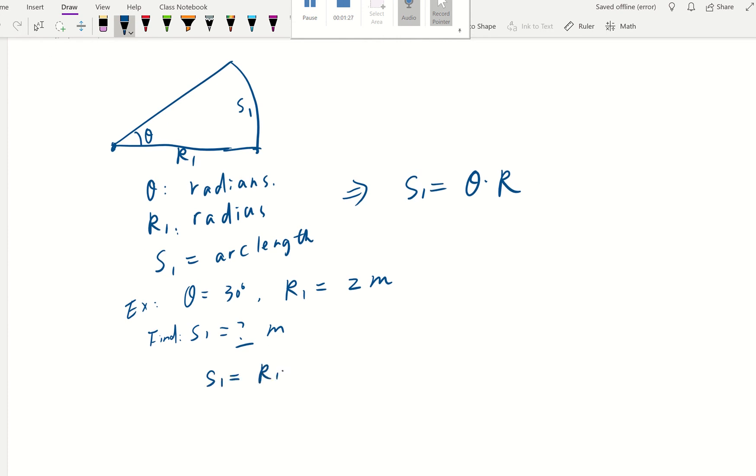r1 times theta. r1 is 2 meters, but the theta has to be in radians. How do we convert degrees to radians? It's the angle divided by 180, because 180 degrees is π in radians. So that's our unit conversion: times π divided by 180.